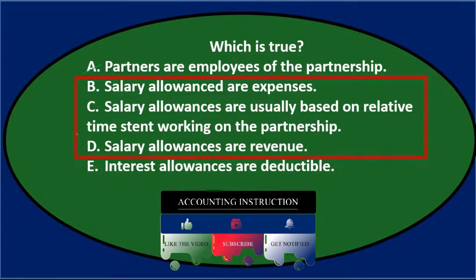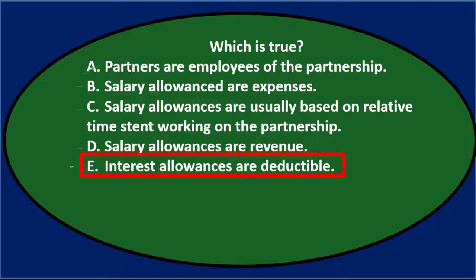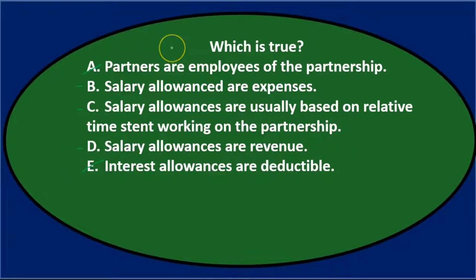C says salary allowances are usually based on relative time spent working on the partnership — that sounds pretty reasonable. D says salary allowances are revenue. As for E, interest allowances are based on capital accounts and aren't deductible — they're not part of net income and not an expense. So we'll eliminate E and focus on B, C, and D.